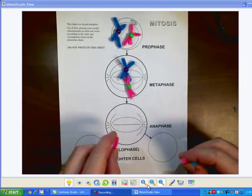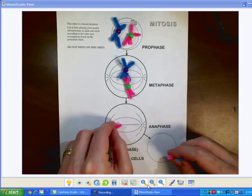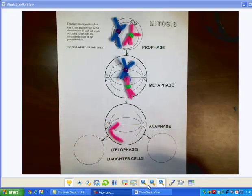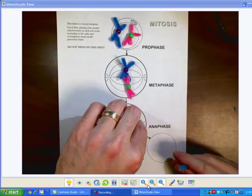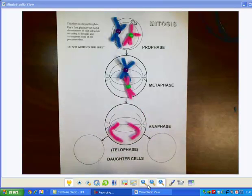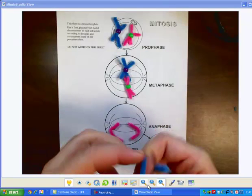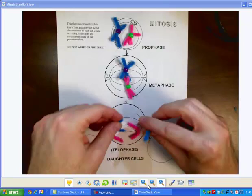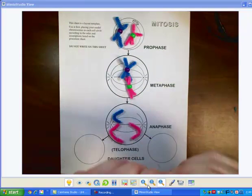Then the spindle fibers will begin to shorten and condense, pulling the two pieces apart, the chromatids apart, which will kind of bend them. It'll look something like this. I used an analogy of Spider-Man pulling with a web, but it will pull these apart like that.